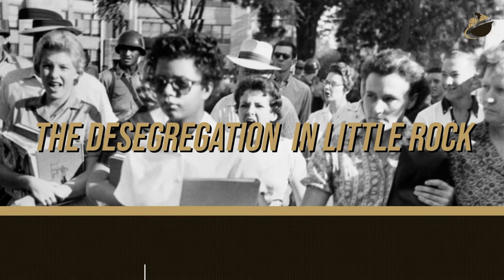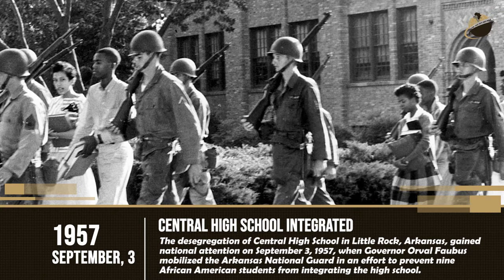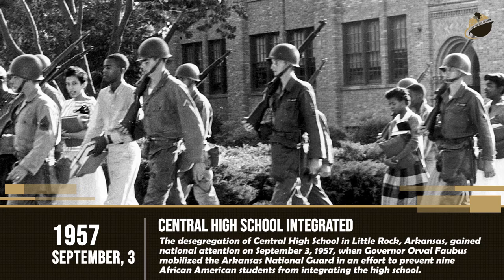1957 — Central High School Integrated, September 3. The desegregation of Central High School in Little Rock, Arkansas, gained national attention on September 3, 1957, when Governor Orville Faubus mobilized the Arkansas National Guard in an effort to prevent nine African American students from integrating the high school.